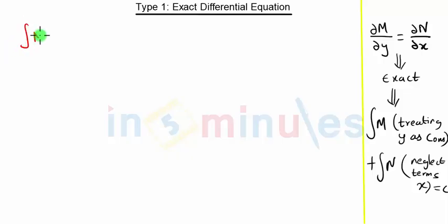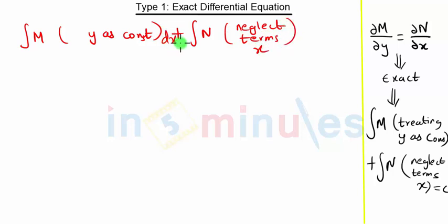So the solution is integration of M treating y as constant plus integration of N neglecting terms which has x. It is with respect to dx and dy respectively. So now we are going to write M.